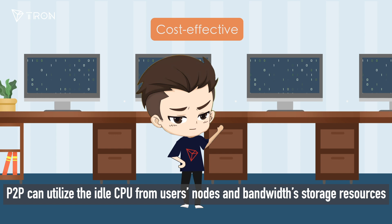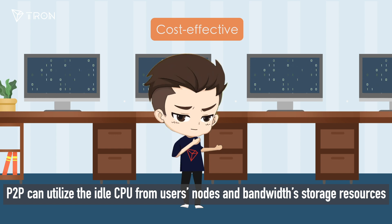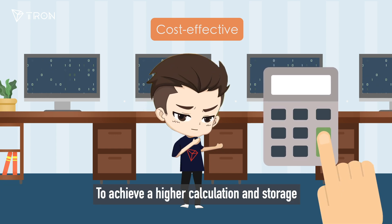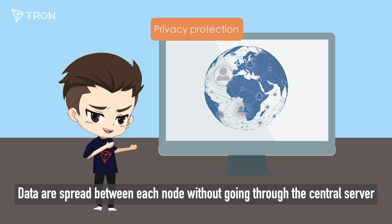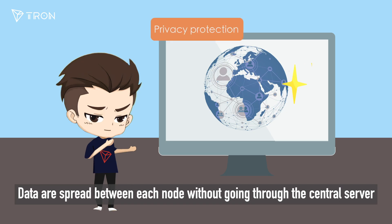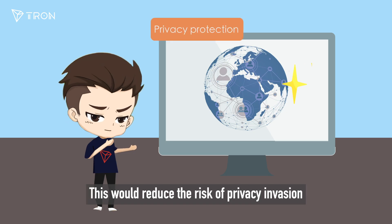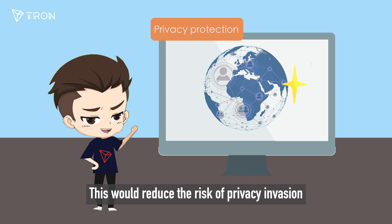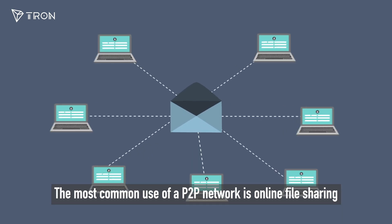P2P can utilize the idle CPU from users' nodes, as well as bandwidth and storage resources, to achieve higher calculation capacity. Data is spread between each node without going through a central server, which reduces the risk of privacy invasion.